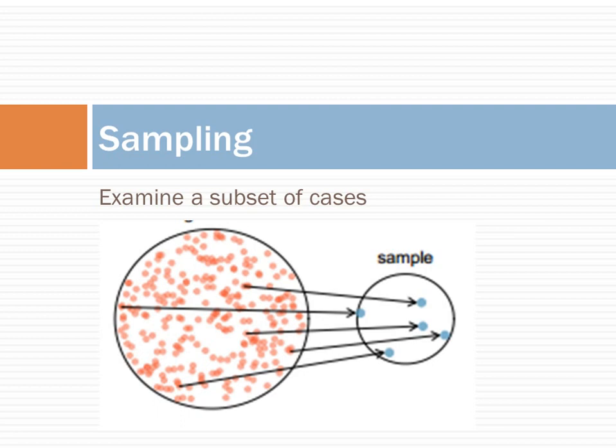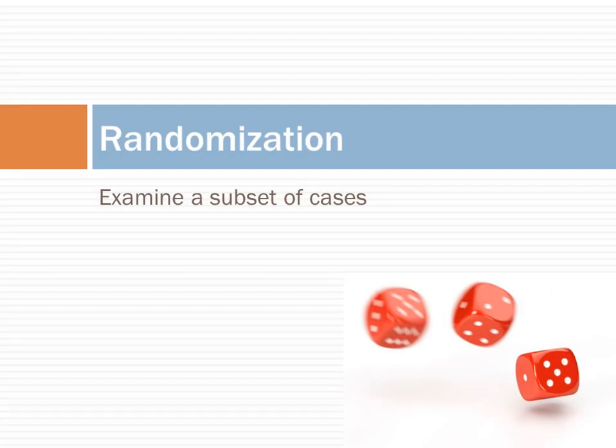Sampling refers to the process of examining a subset of cases to infer the rate in the entire population. Sampling randomly helps reduce bias. If someone was permitted to pick and choose exactly what was included in a sample, it's entirely possible that the sample could be skewed to that person's interest — it's easy to game it. This introduces bias into a sample, and randomization avoids bias.